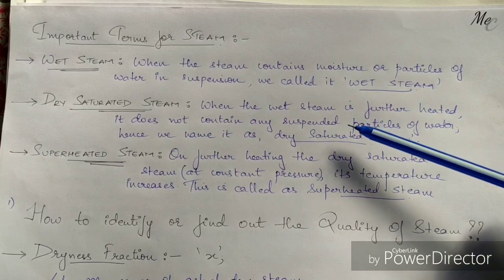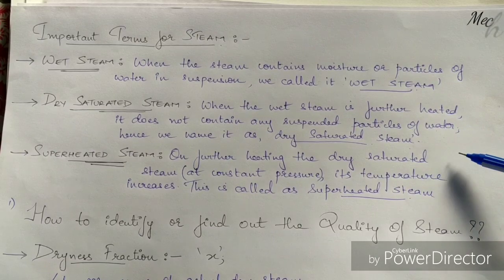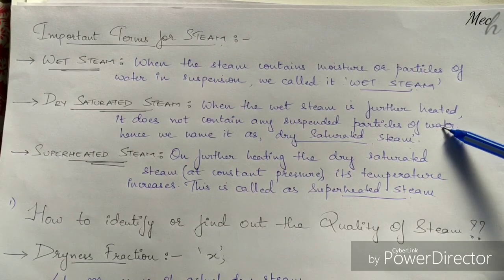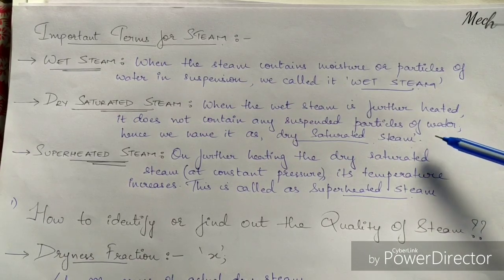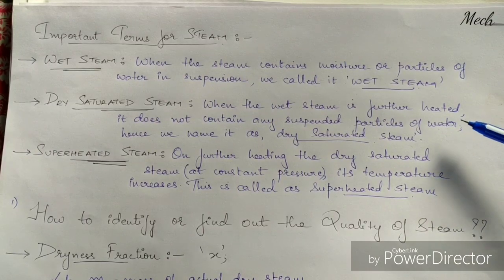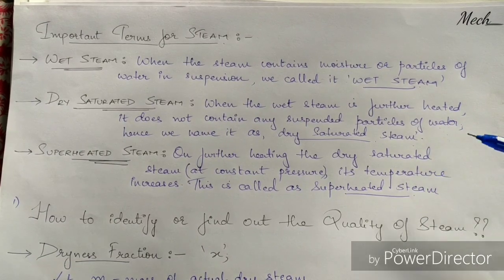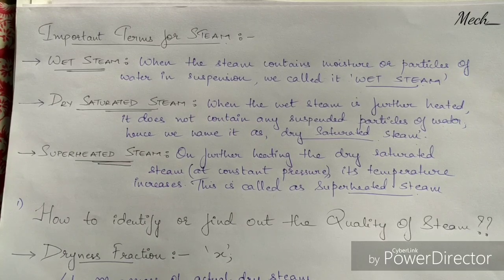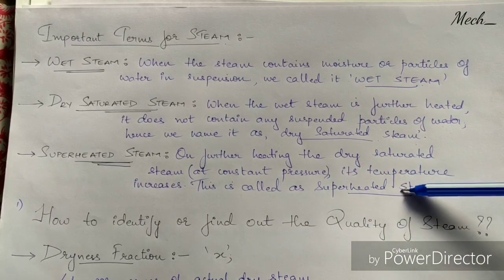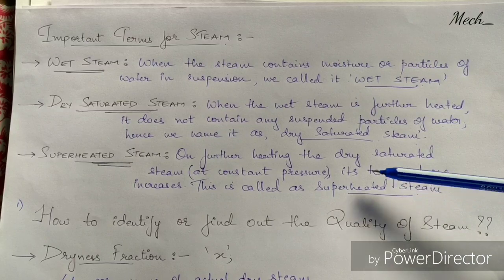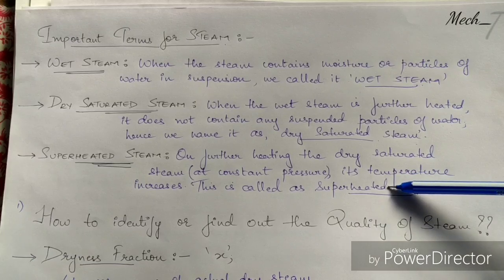The next type is dry saturated steam. When wet steam is further heated at constant pressure, with the passage of time the moisture content starts vaporizing until we reach a point where we have 100% steam with no moisture content — this is called dry saturated steam. On further heating dry saturated steam at constant pressure, its temperature increases, and this is called superheated steam.